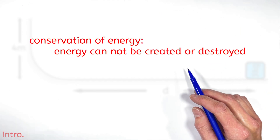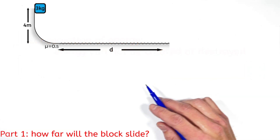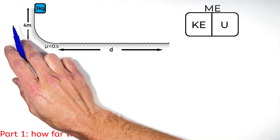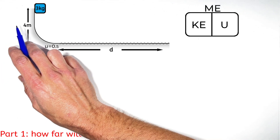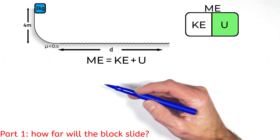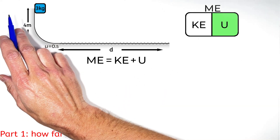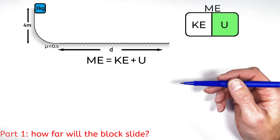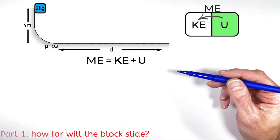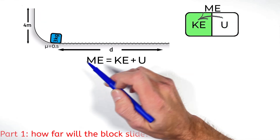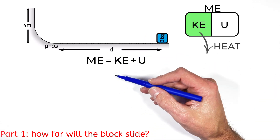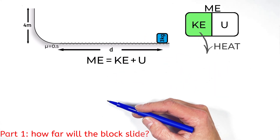Looking at what's happening to the energy of this block, the block has some mechanical energy at any point along this track. Up here where the block begins, it has mechanical energy which is initially potential energy. Mechanical energy is made up of potential and kinetic energy. Since the block is being released from rest, all of that energy is potential — none of it is kinetic. As the block goes down the hill, it's going to lose gravitational potential energy, which turns into kinetic energy. Then when the block hits the rough surface, it's the work by friction that takes away the mechanical energy of the block, turning that energy into heat.